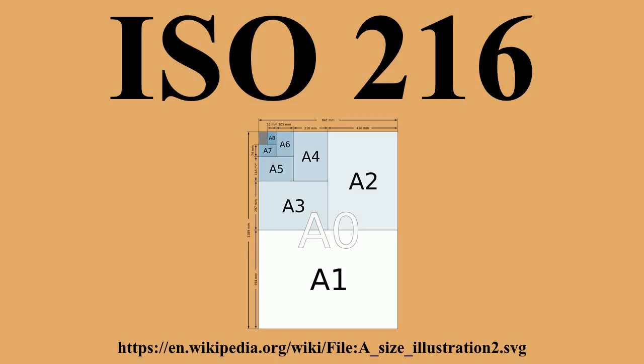Dimensions of A, B, and C series. History: In 1786, the German scientist Georg Christoph Lichtenberg described the advantages of basing a paper size on an aspect ratio of √2 in a letter to Johann Beckmann. The formats that became ISO paper sizes A2, A3, B3, B4, and B5 were developed in France, listed in a 1798 law on taxation of publications based in part on page sizes. The main advantage of this system is its scaling.